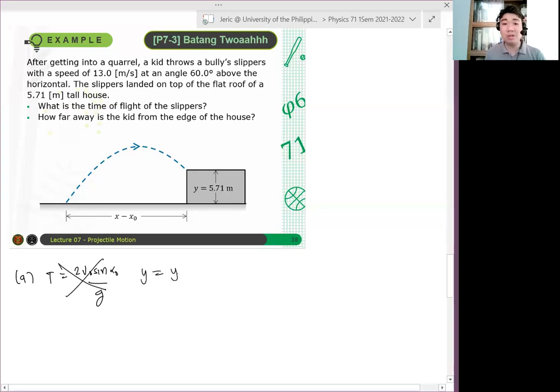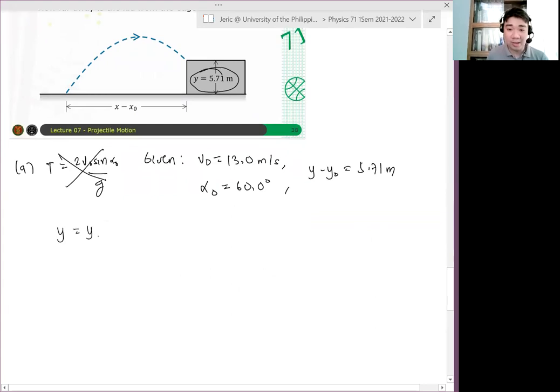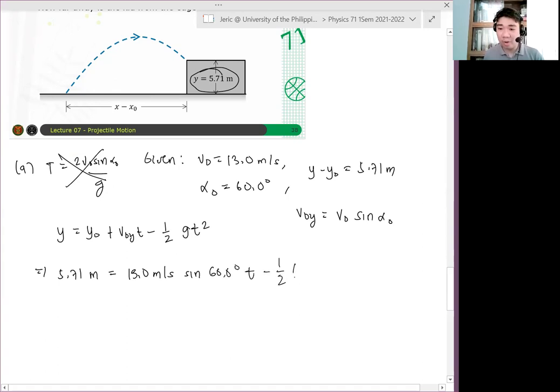So in that case, we have y equals, since we want to determine the time of flight, and what we have here is the vertical height. So ang given quantities ay v naught equals 13.0 meters per second, alpha naught is 60 degrees, and we have our final y minus y naught displacement is 5.71 meters. Thus, we can use our equation y equals y naught plus v naught y t minus one-half g t squared. Okay, so may equation na tayo.